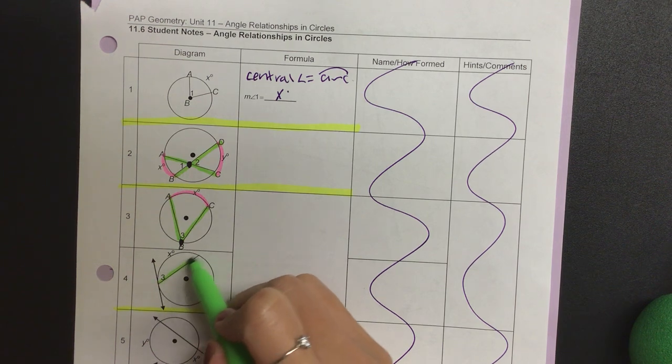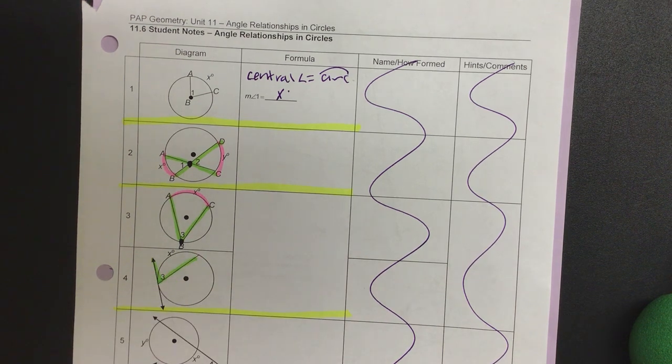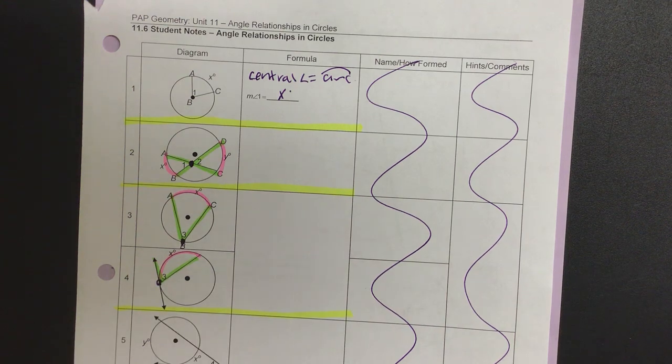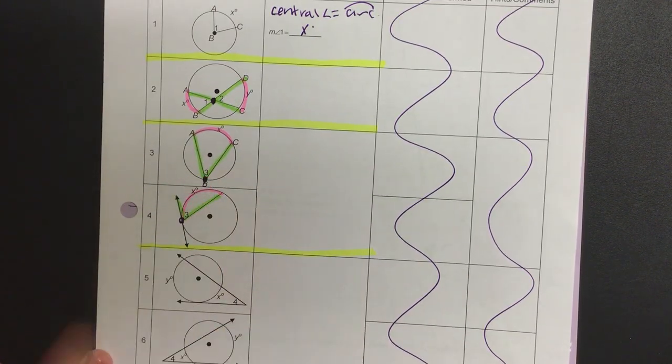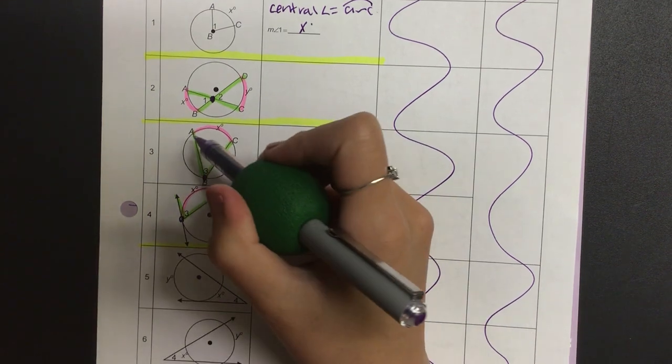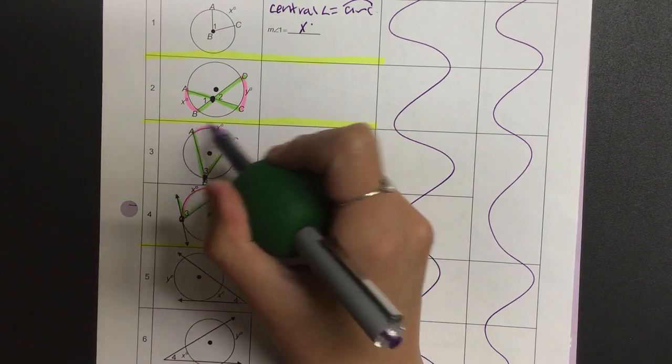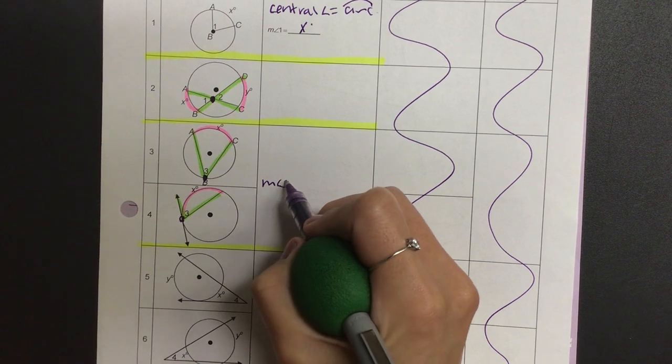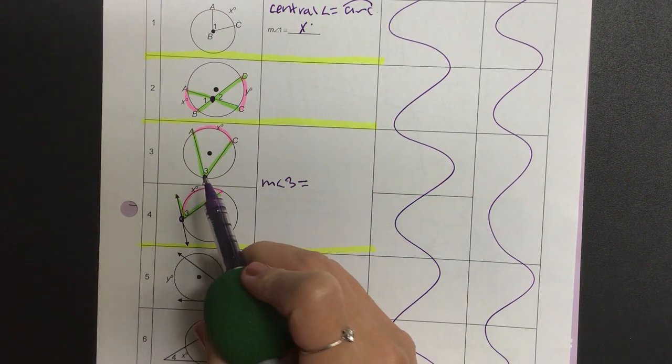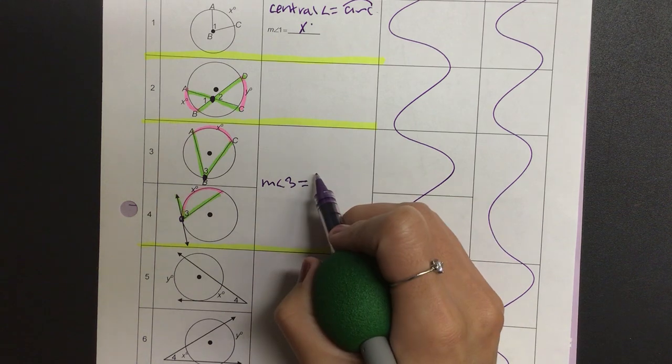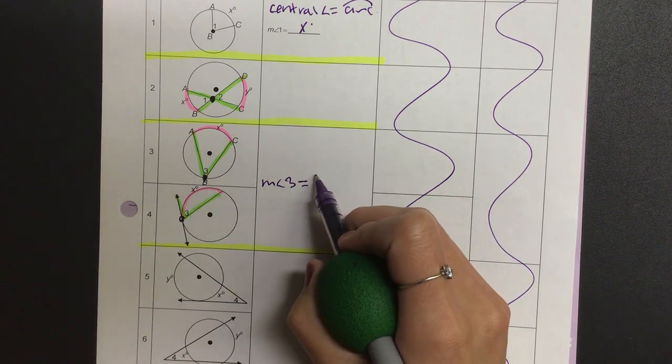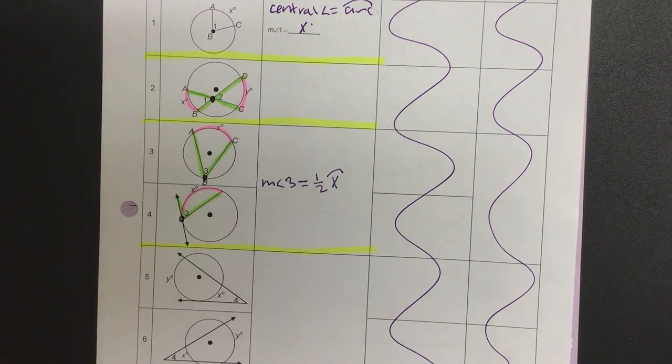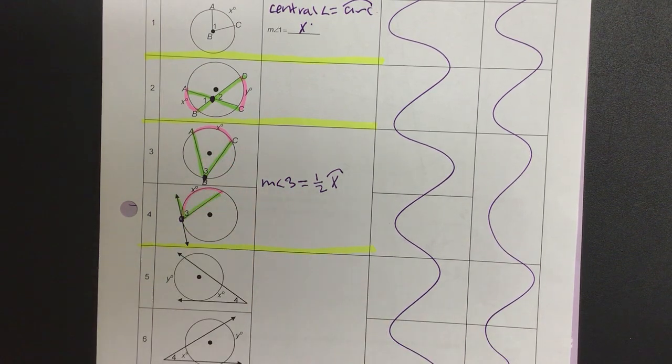And then we have angle three and the intercepted arc. So let's analyze the difference between these two. First of all, did we do some with number three and four last time? If I have the inscribed angle, the intercepted arc is going to create either half or double. So in this case we're going to write: measurement of angle three is equal to—is the angle going to be half or double the arc? The angle will be doubled the arc. The arc is double the angle, so therefore the angle is half of the arc.